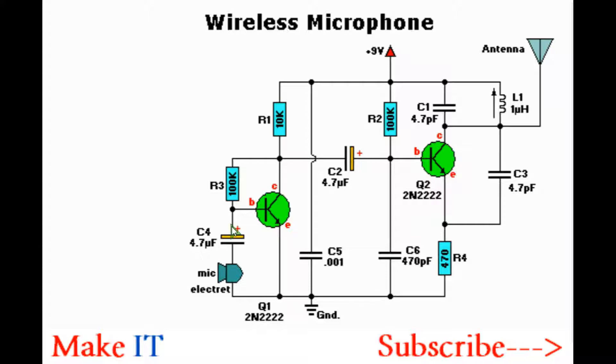Q1 performs audio amplification. The output from the microphone is fed to the first transistor which amplifies it to about two volts, then this is fed to the emitter of transistor Q2.